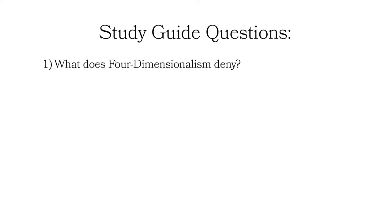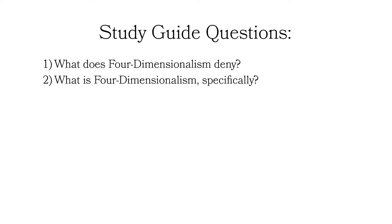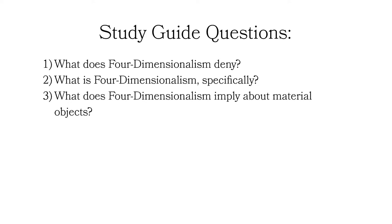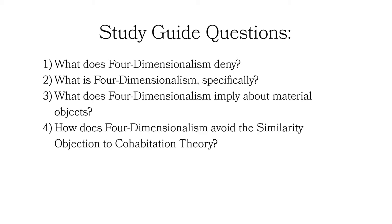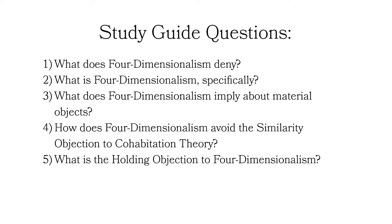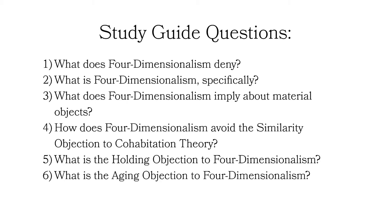One: What does four-dimensionalism deny? Two: What is four-dimensionalism specifically? Three: What does four-dimensionalism imply about material objects? Four: How does four-dimensionalism avoid the similarity objection to cohabitation theory? Five: What is the holding objection to four-dimensionalism? Six: What is the aging objection to four-dimensionalism?